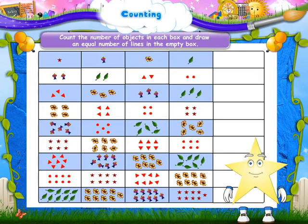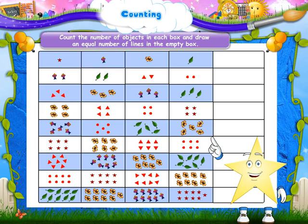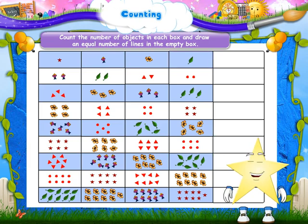One star. One kite. One flower. One leaf. So draw one line in the box.